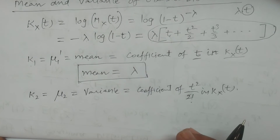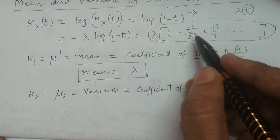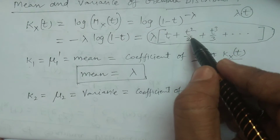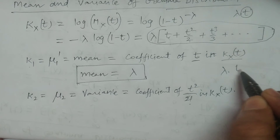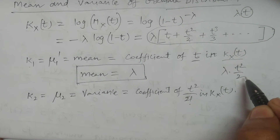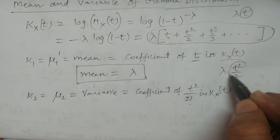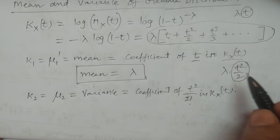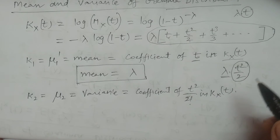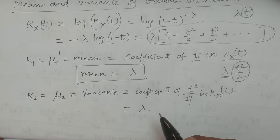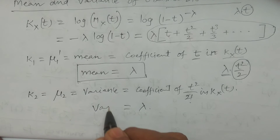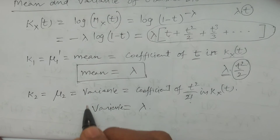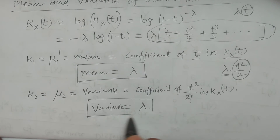Now, looking at the terms of t² in the cumulant generating function, the term is lambda times t²/2. Since 2! = 2, this is the term t²/2!. The coefficient is lambda. Therefore, the variance of the gamma distribution is also lambda.